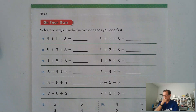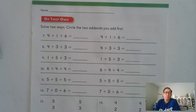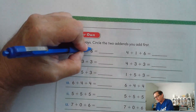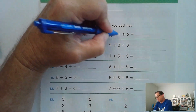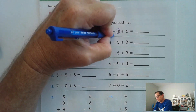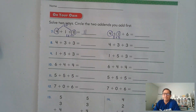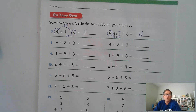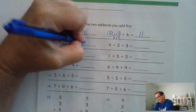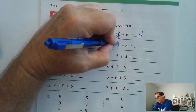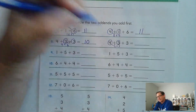Page 135. Solve two ways — circle the two addends you add first. Four plus one plus six: I know that four plus six makes a ten, and ten plus one is eleven. Or we go four plus one first — that leaves me five plus six, and five plus five is ten plus an extra one is eleven. Four plus three plus three: I know my doubles fact, three plus three is six, and four plus six makes a ten. Or four plus three is seven, and seven plus three makes a ten.